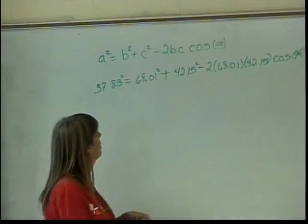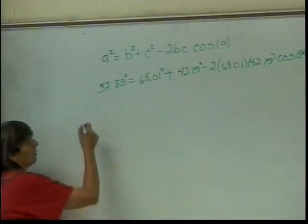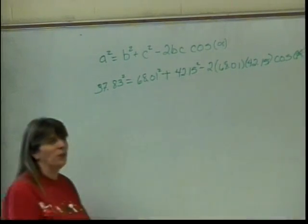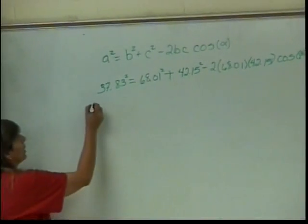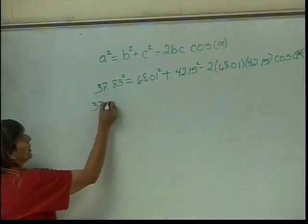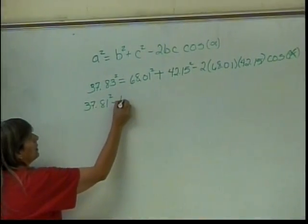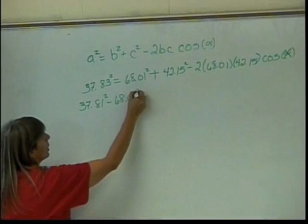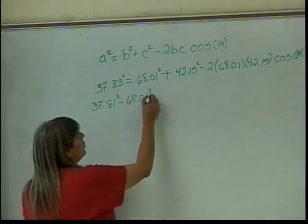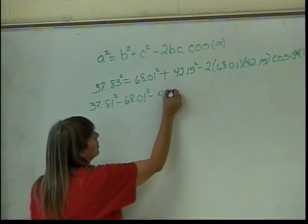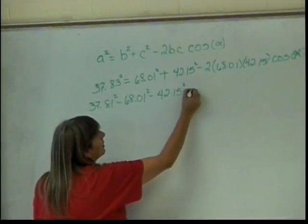All right, well, let's start by moving stuff over. I'm going to do it all over. What do you want to move over? The 68.01. The 68.01? Okay, so I have 37.81 squared minus 68.01 squared. Anything else while I'm at it? And the 42.15 squared, 42.15 squared.